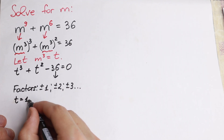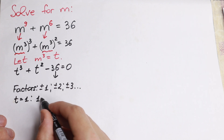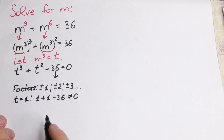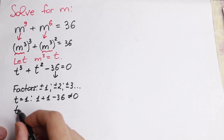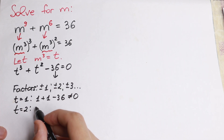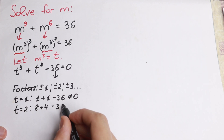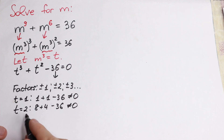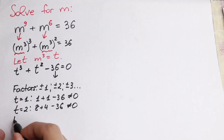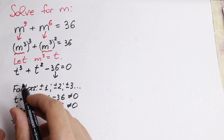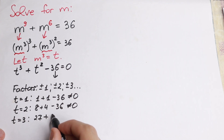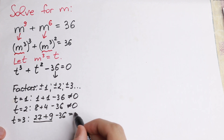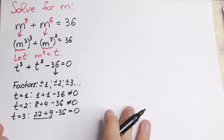If t equals 1, we will have 1 plus 1 minus 36, which is not equal to 0, so this factor is not good. Next, t equals 2: we get 8 plus 4 minus 36, which is not equal to 0. Then t equals 3: t cubed gives 27, plus 9, minus 36. If we add this expression we have 36 minus 36 equal to 0. So as you can see we found one factor.